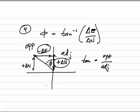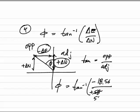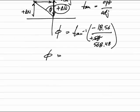I'm going to plug in the numbers. In my case, phi is going to be inverse tangent of my change in easting, negative 18.56 feet, divided by a positive change in northing of 568.48. That comes out to be 1 degree 52 minutes and it rounds to 12 seconds.